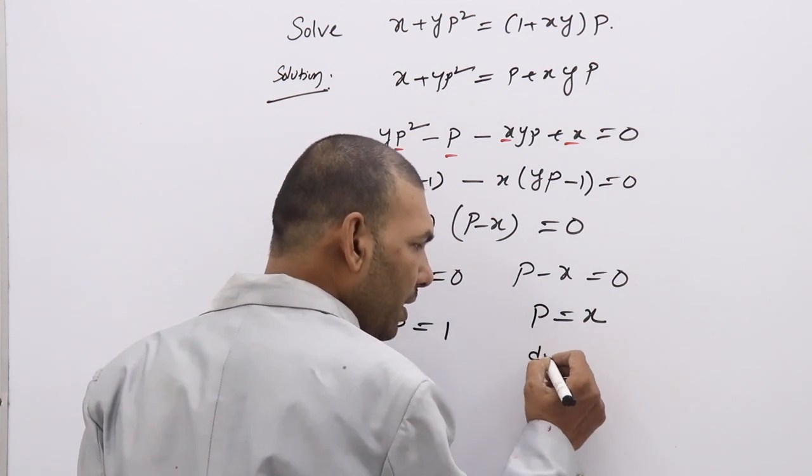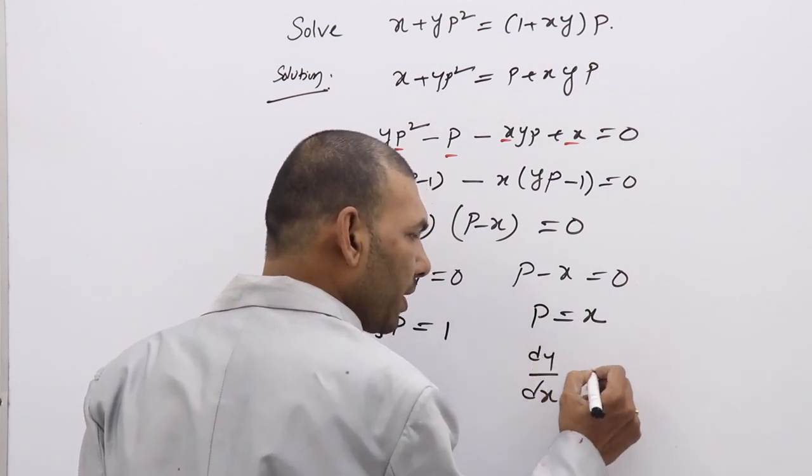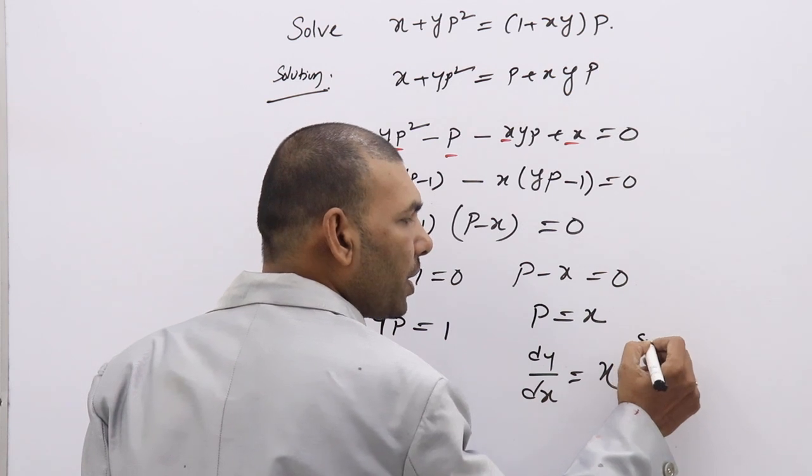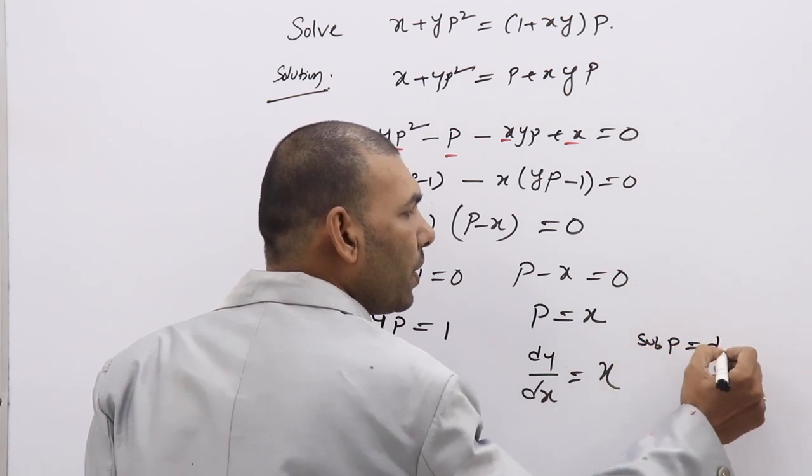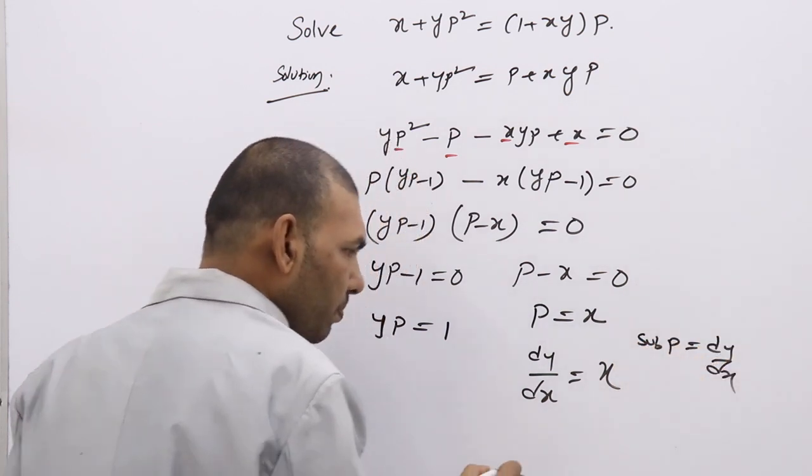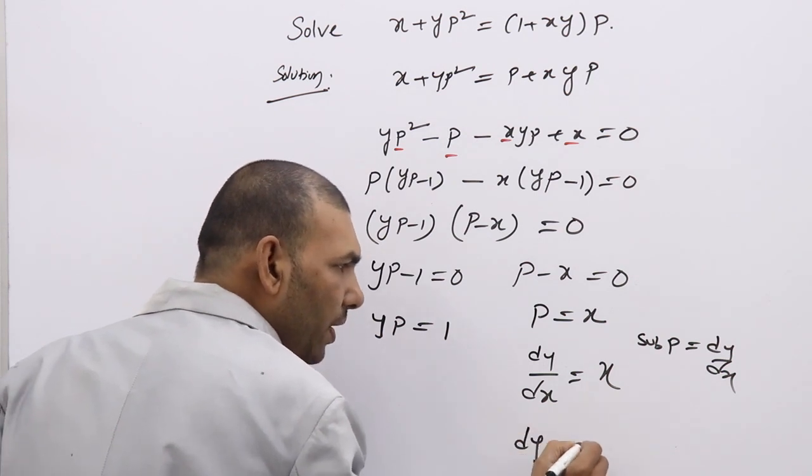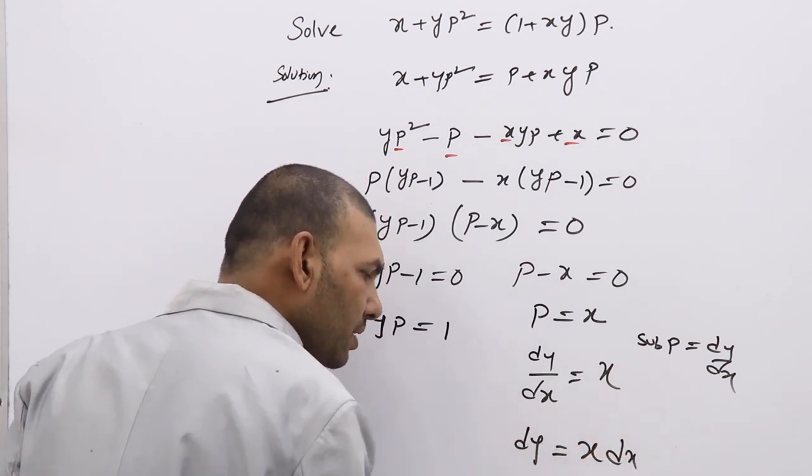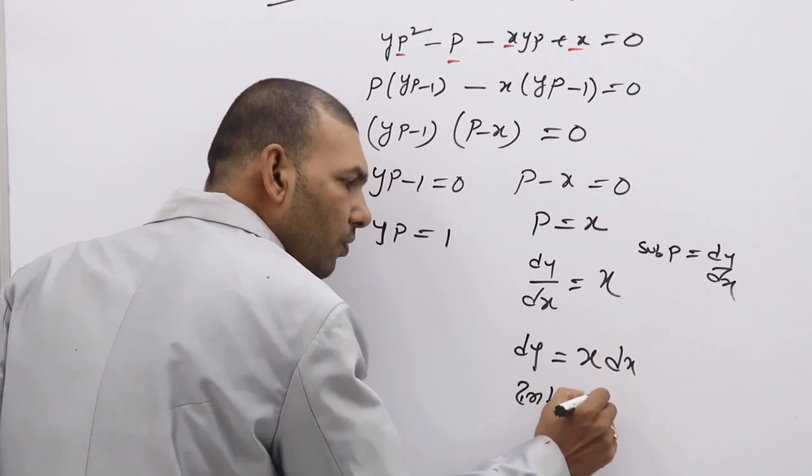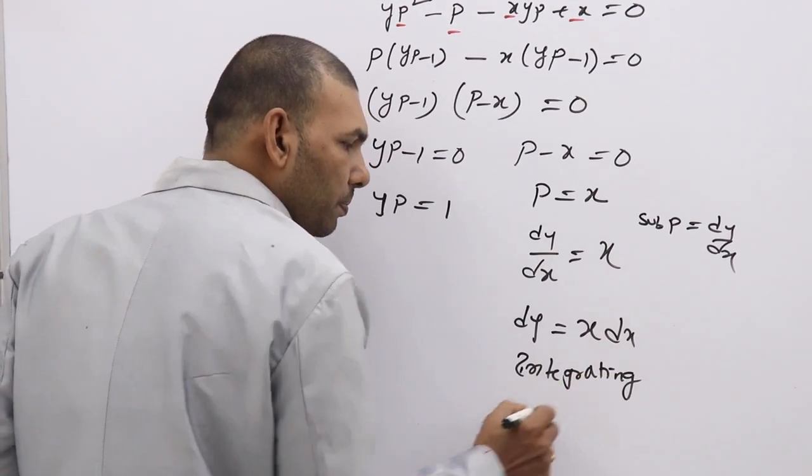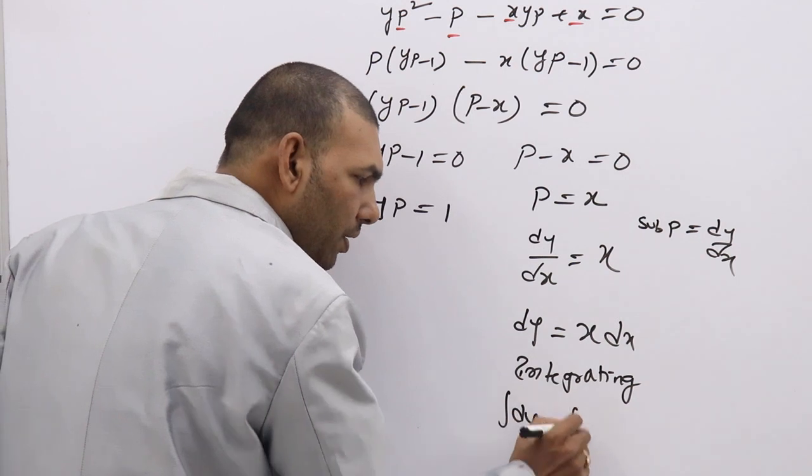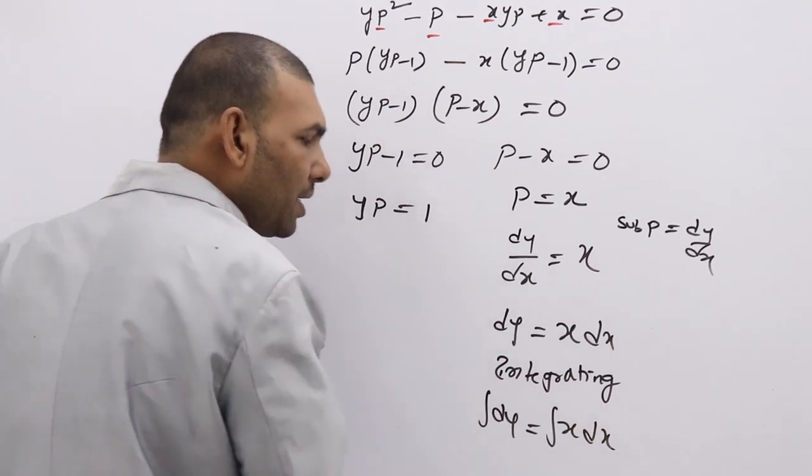If you write in the place of p, dy by dx what you will get? Substituting p equal to dy by dx, so dy equal to x dx. Integrating, if you integrate, integral dy equal to integral x dx.